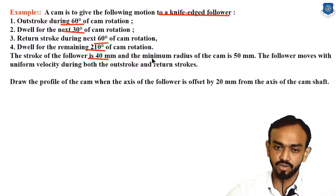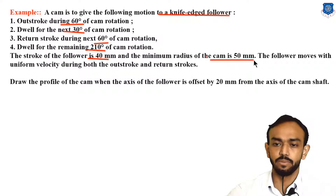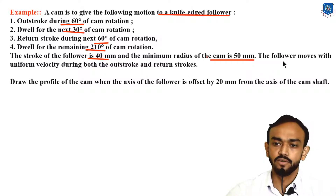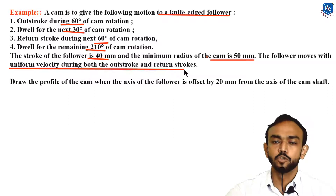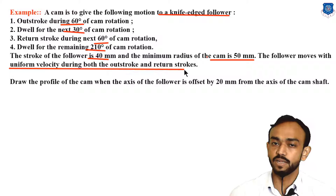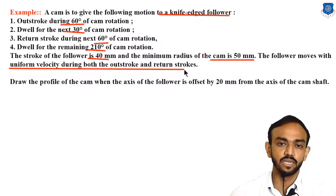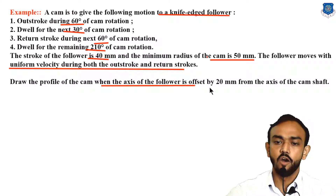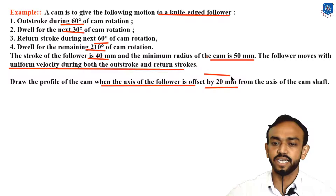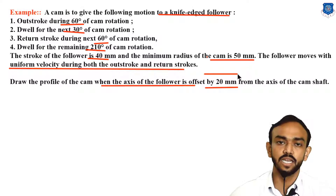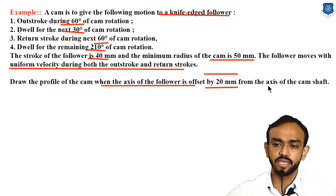The rise is 40 mm. Minimum radius of the cam is 50 mm, meaning the base radius or minimum radius is 50 mm. The follower moves with uniform velocity during both out stroke and return, so the type of motion for the displacement diagram is uniform velocity. Draw the profile of the cam when the axis of the follower is offset by 20 mm from the axis of the camshaft.